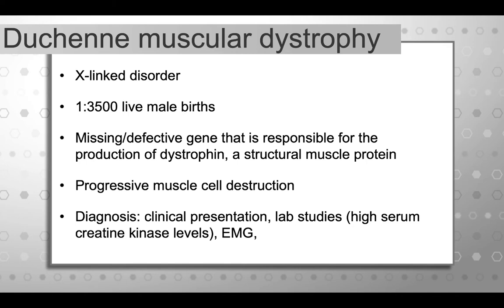Duchenne muscular dystrophy is an X-linked disorder — a sex-linked genetic condition that is, because of that, almost exclusively found in boys. It occurs in one out of every 3,500 live male births, and it's due to a missing or defective gene responsible for the production of dystrophin, which is a structural muscle protein. Without that production of dystrophin, boys with muscular dystrophy experience progressive muscle cell destruction.